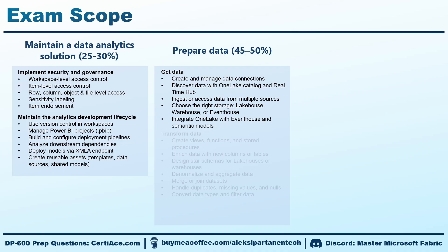After you have some data, the next step is transforming that data. You need to know how to create views, functions, and stored procedures to shape and organize your data. You should also understand how to enrich data by adding new columns or tables that make your model more useful. A big part of transformation is learning how to design a proper star schema for your lakehouse or warehouse. You will also need to know how to denormalize and aggregate data to improve performance and simplify reporting. It is important to understand how to merge or join datasets from different sources. You should also know how to handle duplicates, missing values, and nulls to keep your data clean and reliable. And finally, you need to know how to convert data types and filter data to make sure everything is ready for analysis.